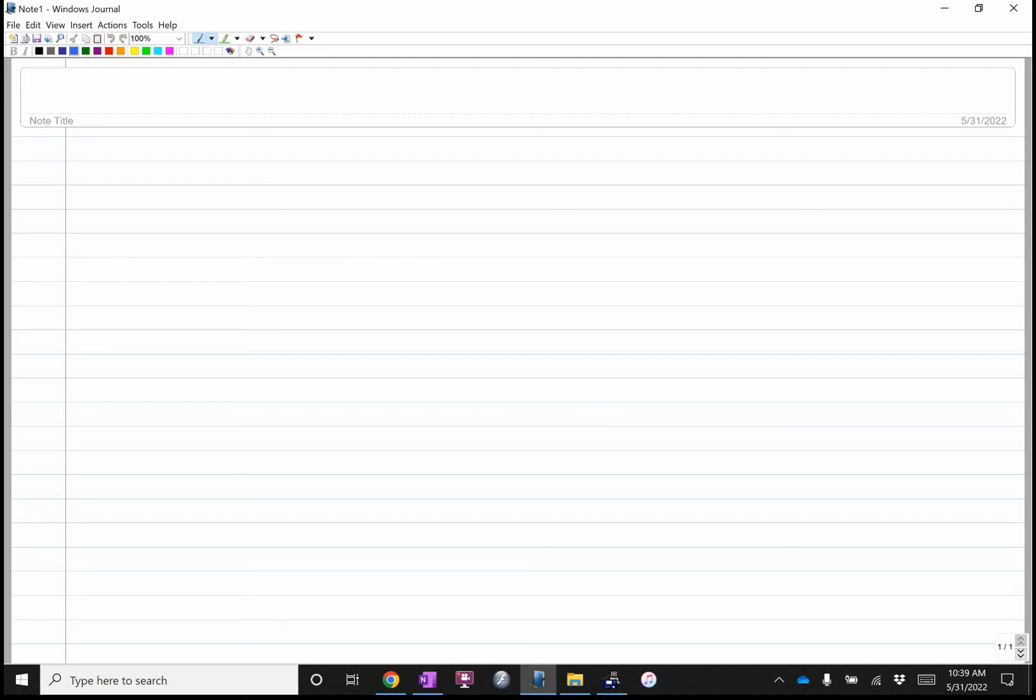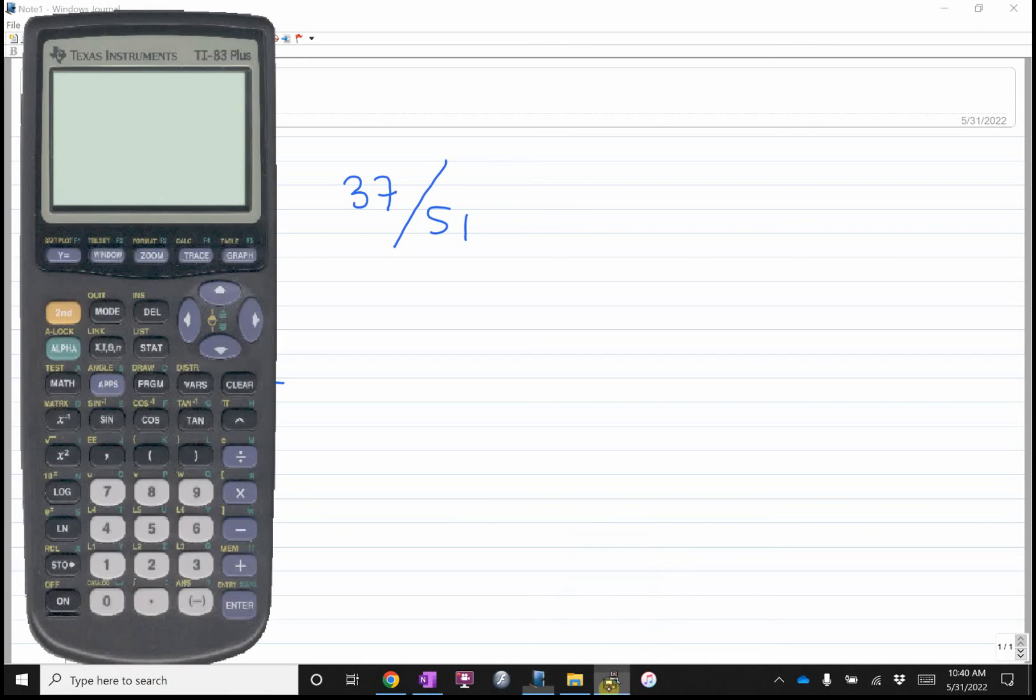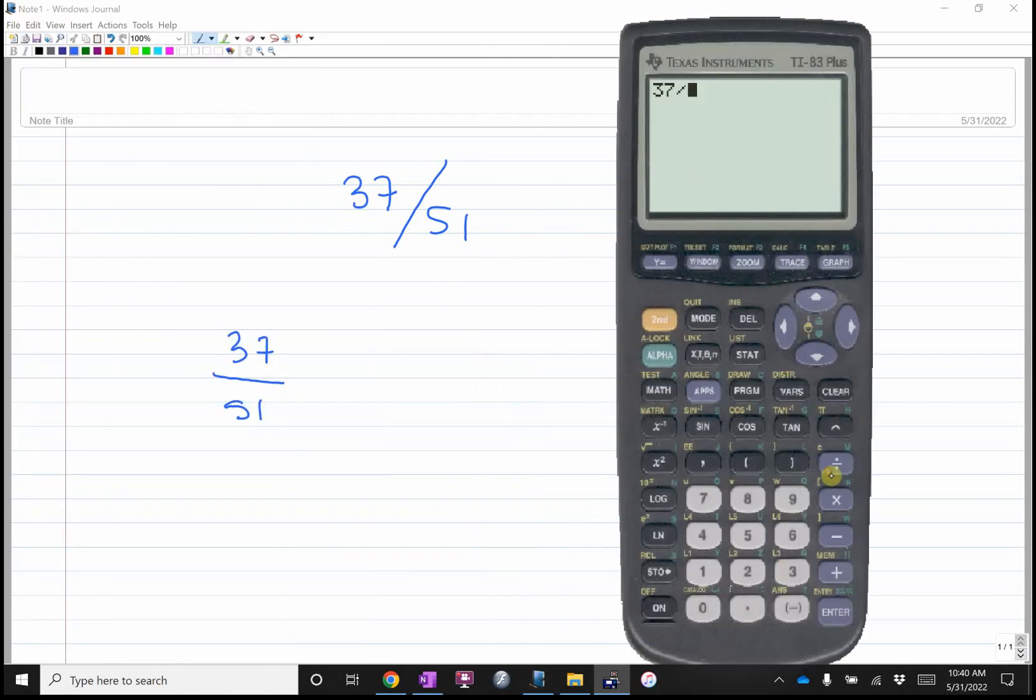Let's suppose I just wrote a test. Let's suppose the test was out of 51 and I get 37 out of 51. How do I figure out what percent that is? You would go 37 divided by 51. If I really want to make it a percent, I can multiply it by 100.